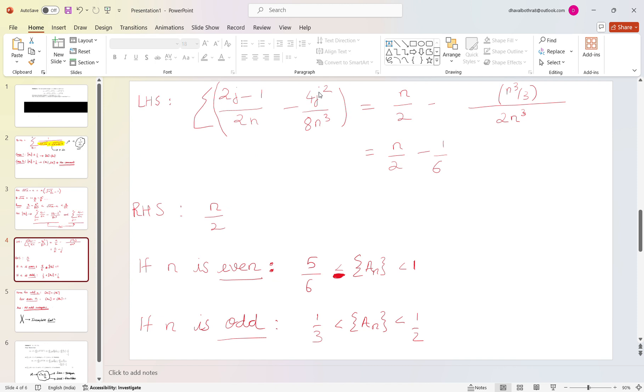And hence LHS has to be at least n by 2 minus 1 by 6 and RHS is n by 2. Now if we say n is even, say for example 4, then the RHS will become 2 and LHS will be 2 minus 1 by 6.